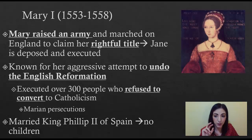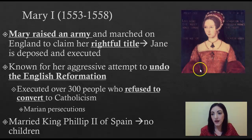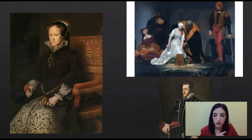Mary I, however, very quickly raised an army, marched on England and claimed her rightful title to the throne. Jane is deposed and executed — she's sometimes known as the Nine Days Queen. Mary I is known for her aggressive attempt to undo the English Reformation. In the six years while Edward was king, almost all of that is completely undone during Mary's reign, because Mary earns the nickname Bloody Mary for the execution of over 300 people who refused to convert back to Catholicism. This is also known as the Marian persecutions. She was married to King Philip II of Spain, but since they were older when they married they didn't have any children. The question becomes what happens to the throne of England when Mary dies with no children to survive her.